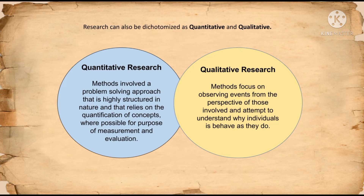Research can also be dichotomized as quantitative and qualitative research. Quantitative research is a method that involves a problem-solving approach that is highly structured in nature, and that relies on the quantification of concepts where possible for purposes of measurement and evaluation. Quantitative research is the process of collecting and analyzing numerical data, and focuses on problem-solving. Qualitative research methods focus on observing events from the perspective of those involved and attempt to understand the way individuals behave as they do. Furthermore, qualitative research is more measured by its quality rather than quantity.